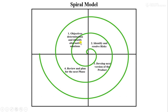The number of loops or iterations depends upon the project. The radius of the spiral represents the cost of the project so far, and the angular dimension represents the progress of the project. This 90-degree angle represents the progress made in each phase.